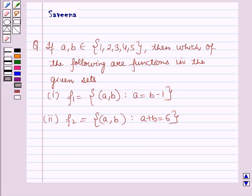Hello and welcome to the session. In this session we will discuss a question which says that if a and b belong to the set containing the elements 1, 2, 3, 4 and 5, then which of the following are functions in the given sets?